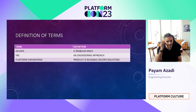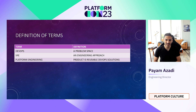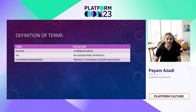Before we get too deep, I want to talk about some definitions of terms and how I'm going to use them for purposes of this presentation — not necessarily that these are the right terms for the industry. When I use DevOps, I'm referring to the problem space: the releases, the infrastructure, the observability, and all the rest that comes with that. And SRE is an engineering approach that applies software engineering principles to the DevOps space.